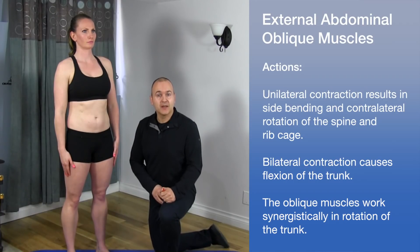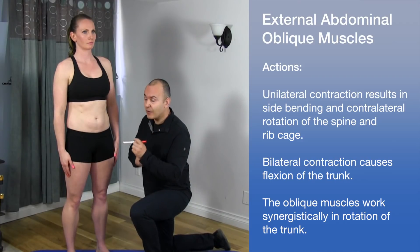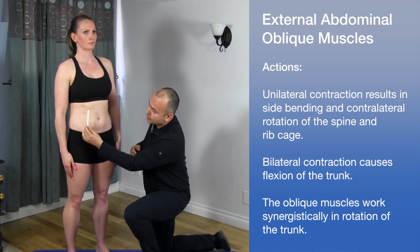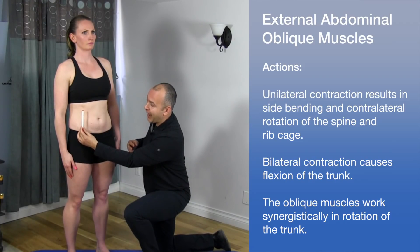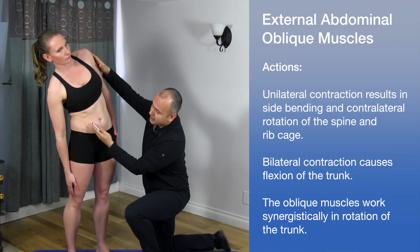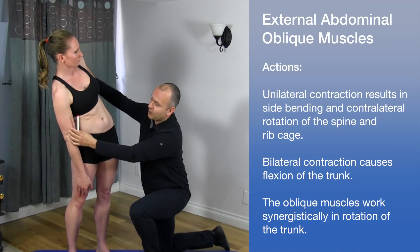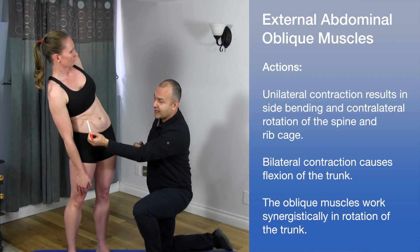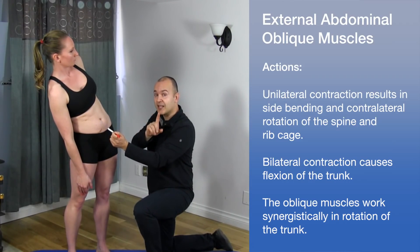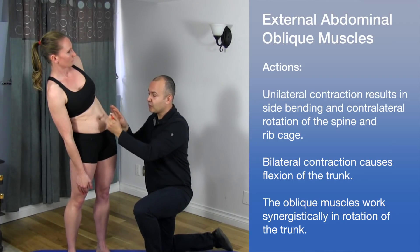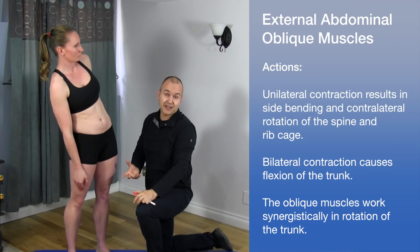Taking fiber orientation into account — running diagonally laterally to medially — if the right external abdominal oblique contracts, it pulls into right-side flexion and rotation, bringing the opposite shoulder back. Importantly, when the right external abdominal oblique contracts, it works synergistically with the left internal abdominal oblique. These muscles work together to create trunk rotation and flexion.